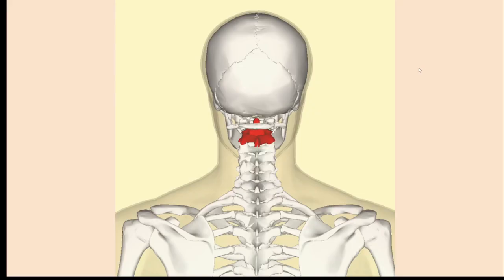To do this, the axis has a bony projection coming out of the front called the odontoid process, or the dens. This process is partially derived from the centrum of the atlas, which has instead fused to the axis. The odontoid process is inserted into the atlas and acts as a swivel, or axis, for the atlas and skull.